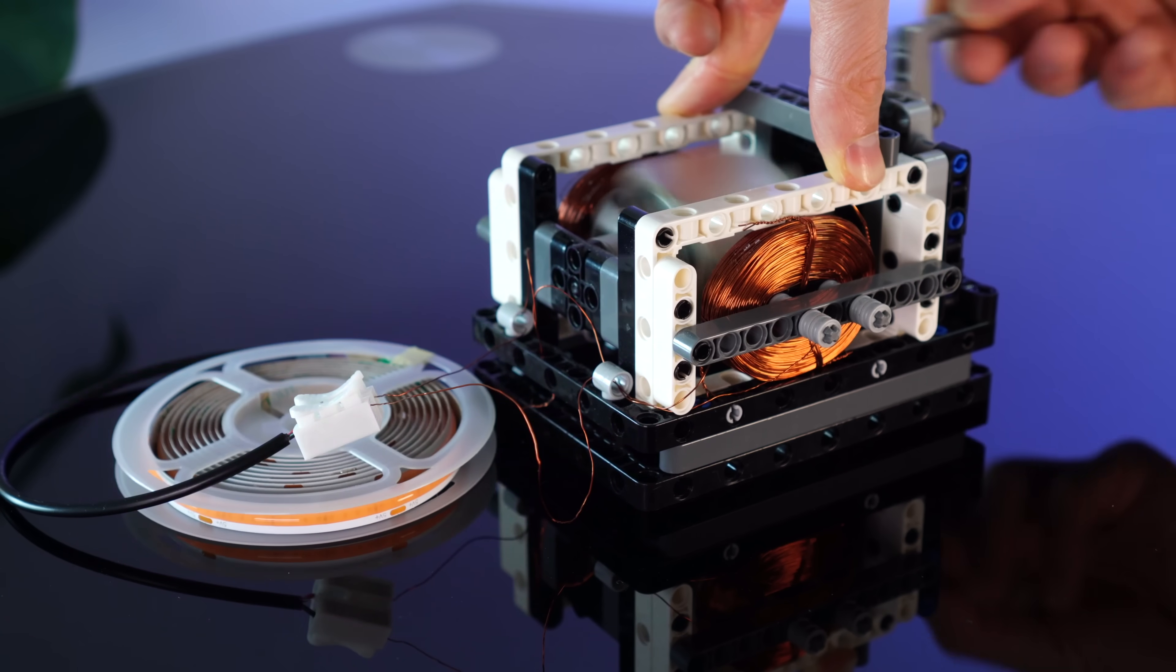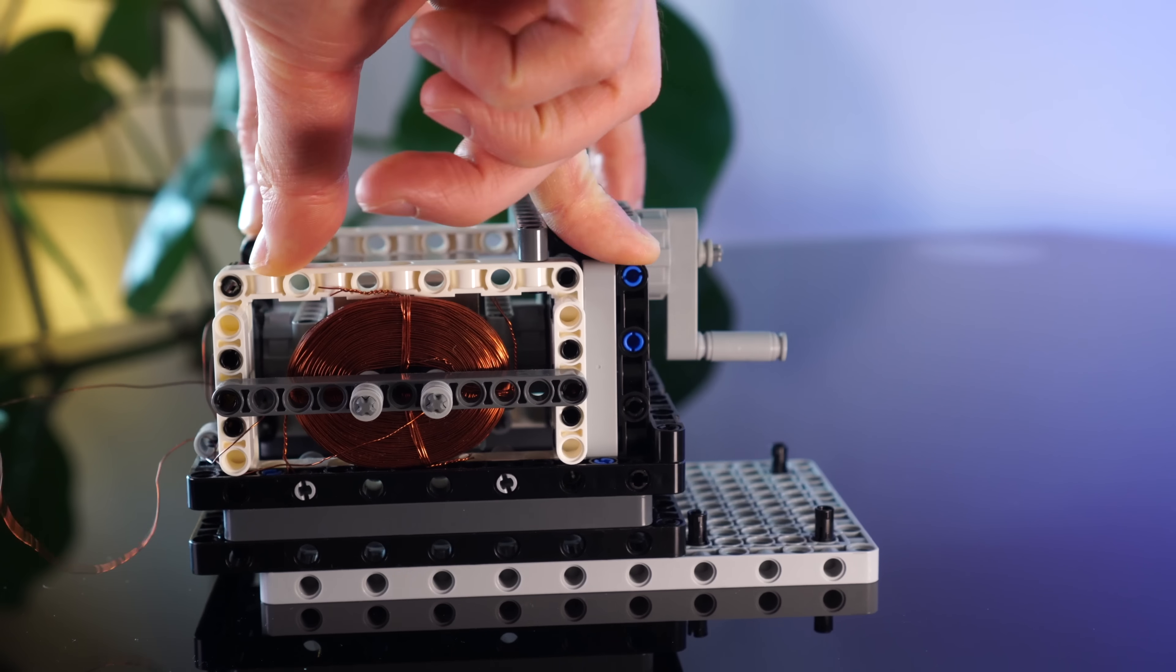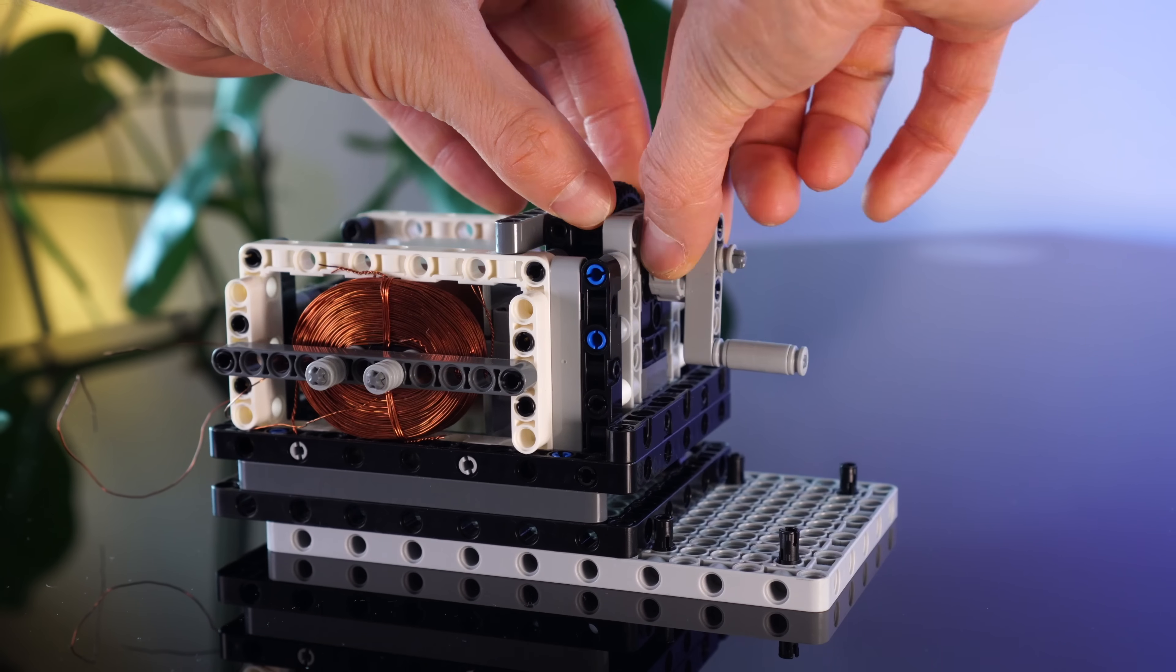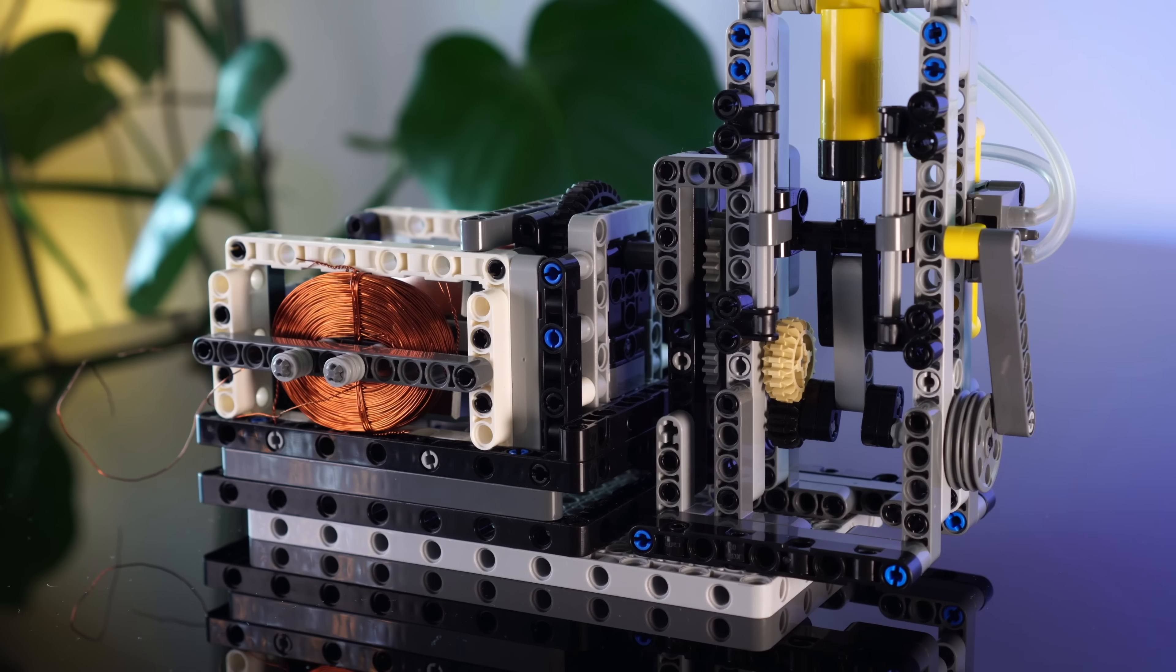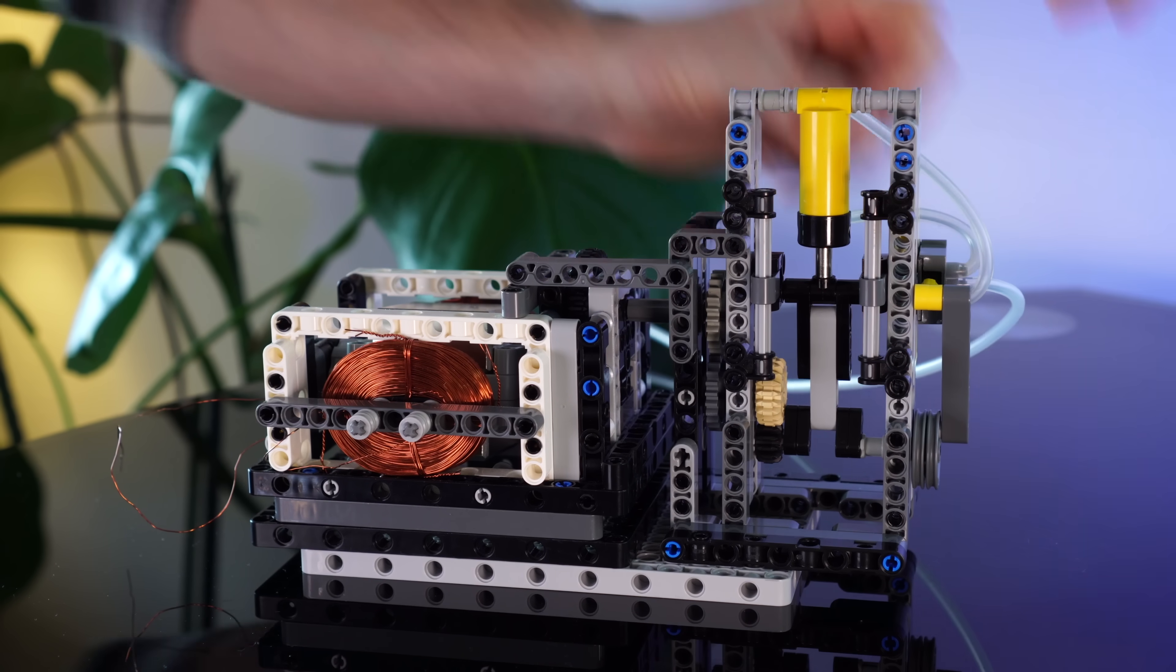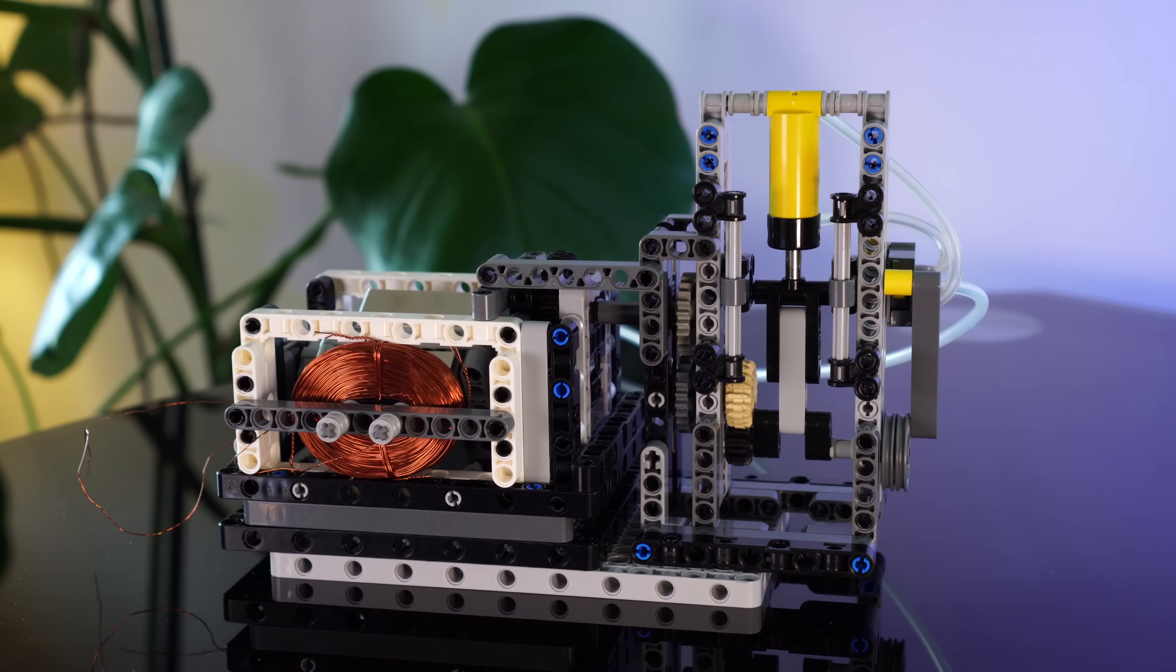So now let's cram these two contraptions together. Here's our base. Pop on the generator. Chuck away the handle and get rid of this flywheel. And introduce them to each other. Feed it with some hosing to the tank and set its starting position. And let's see.